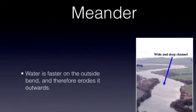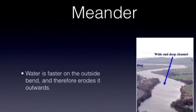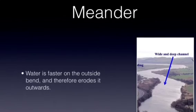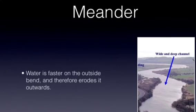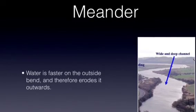As the velocity slows on the inside of the bend, critical deposition velocity is often reached and deposition occurs. This creates a point bar or a slip off slope. The helicoidal flow of the river causes the river to move laterally across the flood plain.